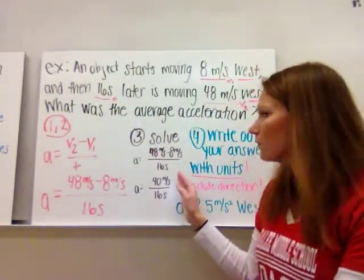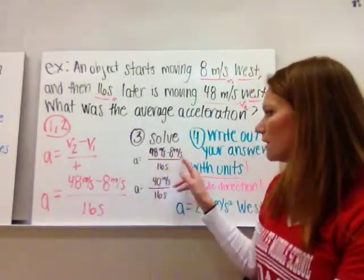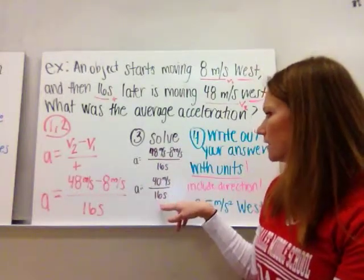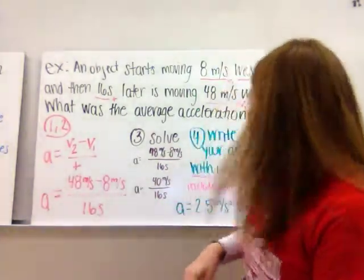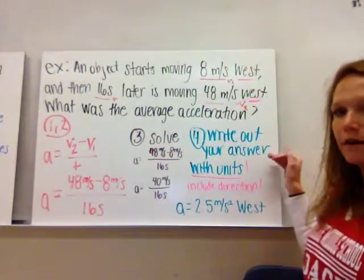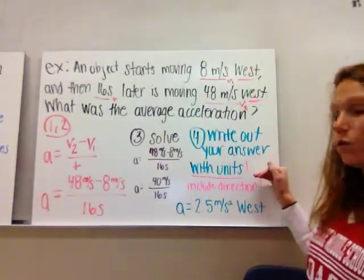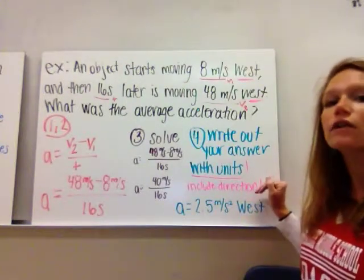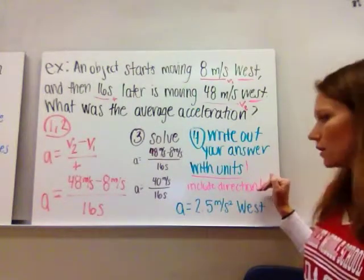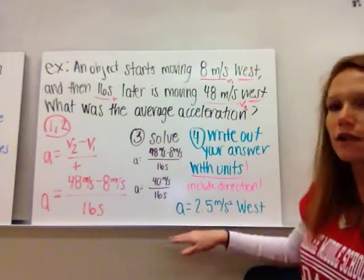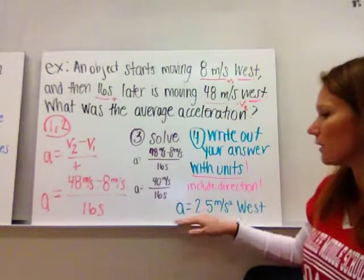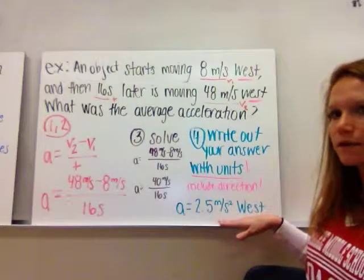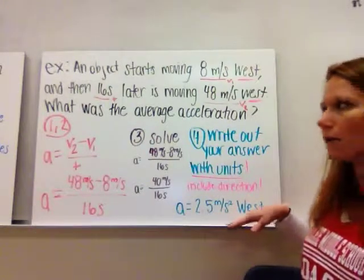Then you're just going to solve: 48 minus 8 is 40, divided by 16. Then you write out your answer with your units. Since it gave you velocity, you need to include the direction. So your acceleration for this one equals 2.5 meters per second squared west.